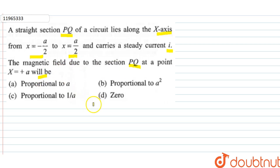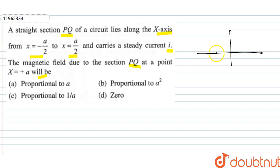So this is the figure drawn. From the x-direction, this goes from minus a/2 to a/2. You can see that the point is at x equal to a, and it carries the current i.